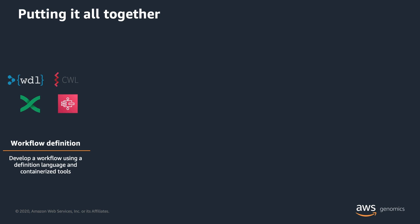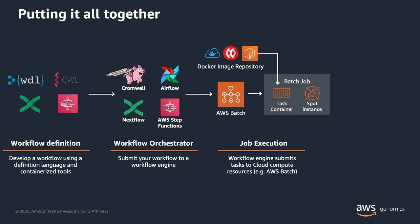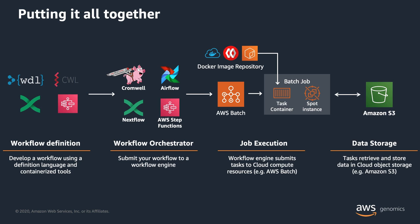To assemble the whole picture, you write your workflow definition using one of these languages and send it to an orchestration engine specific to that language — for WDL you'd send it to Cromwell, for Nextflow to Nextflow itself, for Amazon States Language to AWS Step Functions. That engine then integrates with something like AWS Batch to run containerized jobs in a scalable way, and all data from the workflow is sent to cloud object storage like Amazon S3.